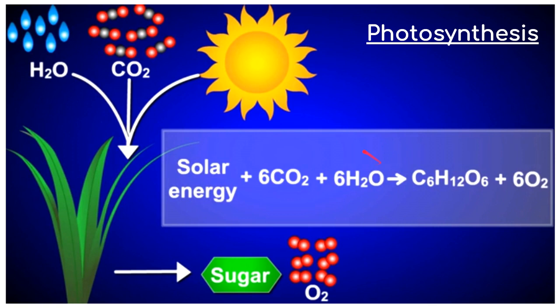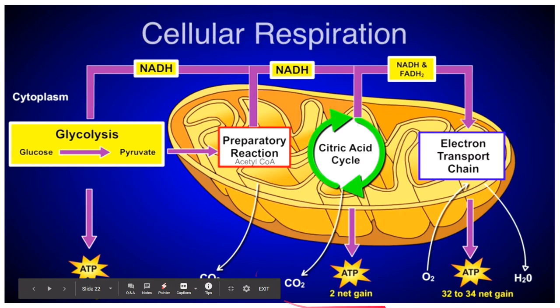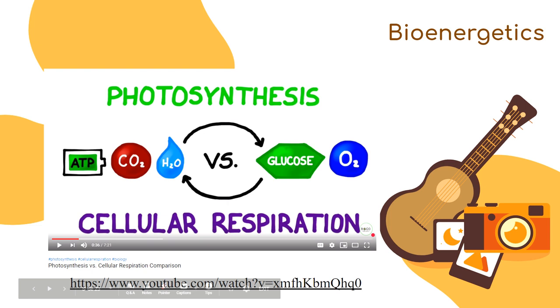The chemical equation of photosynthesis: solar energy plus six molecules of carbon dioxide and six molecules of water are needed to create one glucose molecule, giving off six oxygen molecules as a byproduct. In cellular respiration, one glucose molecule is broken down through glycolysis, then the Krebs cycle, then the electron transport chain, just to harvest ATP — adenosine triphosphate — giving off carbon dioxide and water as byproducts.